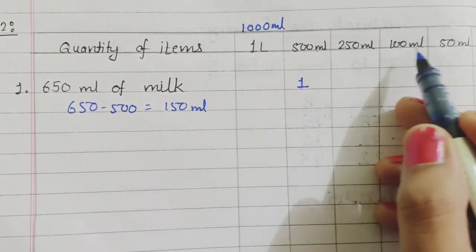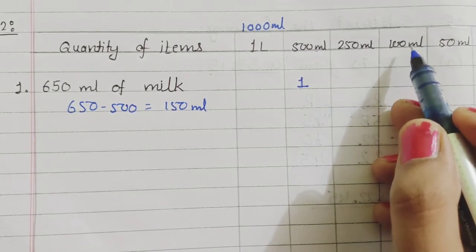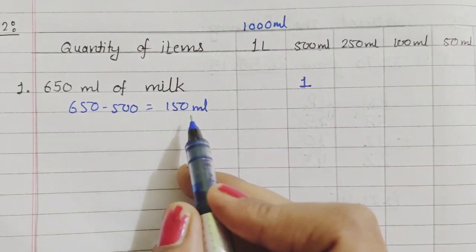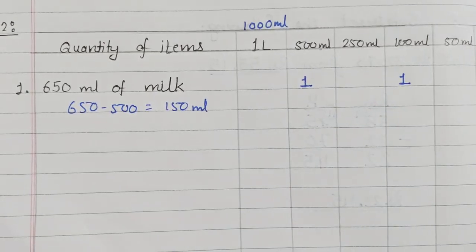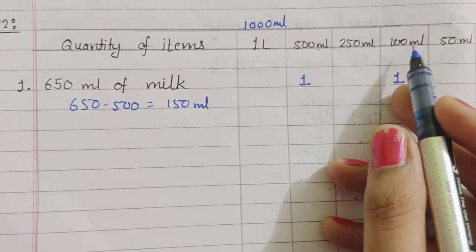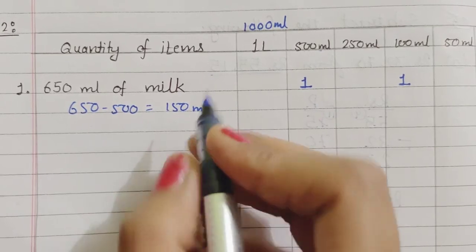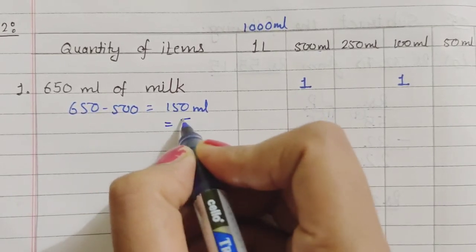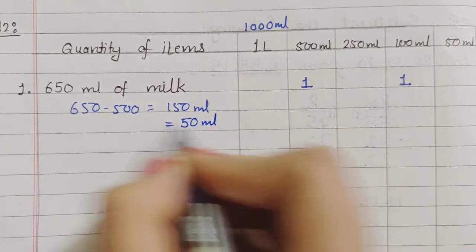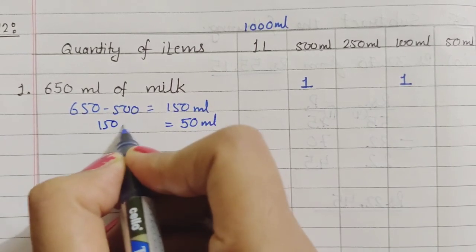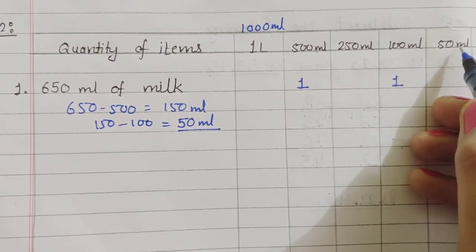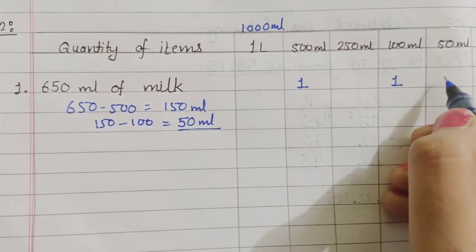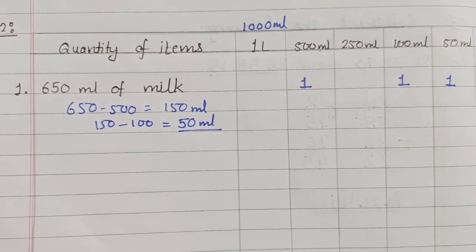Move to the next one. Here we have 100 ml. Yes, it is 150 and here we have 100 ml container, so we can measure the liquid in this container. We will use this container only one time. After using this container, we will be left with 50 ml, because 150 minus 100 equals 50.